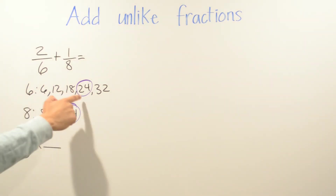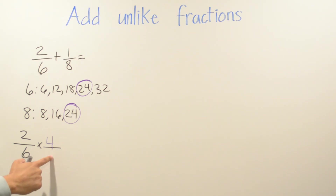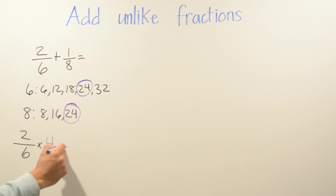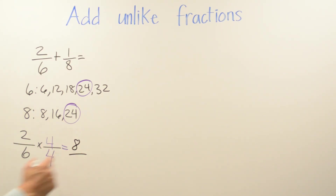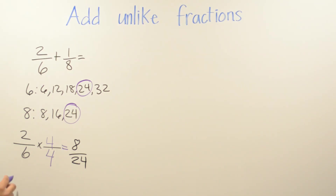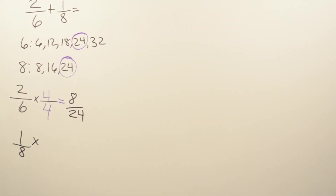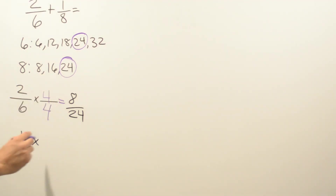I bring down two-sixths first. How many times do I multiply 6 to get to 24? One, two, three, four — so I multiply by 4. Whatever we do on the top we also do on the bottom. So 2 times 4 is 8, and 6 times 4 is 24.